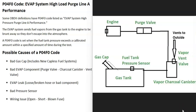Vehicles have what's called an EVAP system that basically takes all the gas vapors from the gas tank and feeds them up to the engine to be burned off, so they don't escape into the atmosphere. This is for emissions. When you get this P04F0 code, the computer is seeing some kind of problem inside the system, and it's got to be troubleshot to know why.